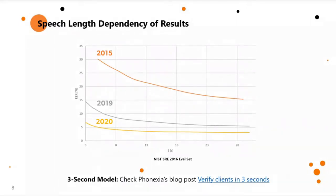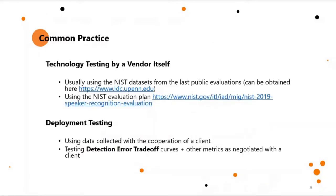In these days, voice biometry systems are much better and more precise than humans. In common practice when developing and deploying a voice biometry system, there is technology testing by the vendor using data provided by the National Institute of Standards and Technology in the USA. There is a public evaluation every two years, and we follow this evaluation plan. Any new system must be better than the previous one.